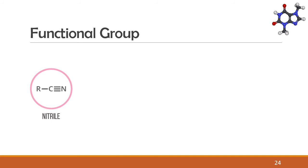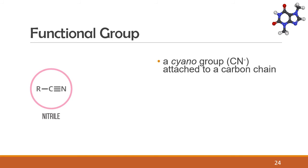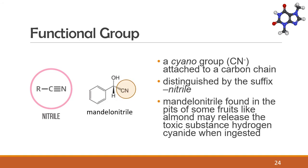Then we go to the nitrile group. A nitrile has a cyano group attached to a carbon chain. The cyano group is a carbon triple bonded to a nitrogen atom. Nitriles are distinguished by the suffix "-nitrile" in their names. Mandelonitrile, found in the pits of some fruits like almonds, may release the toxic substance hydrogen cyanide when ingested.